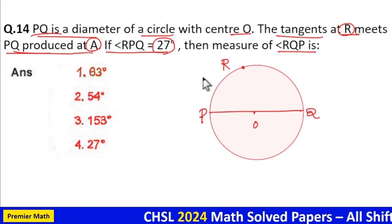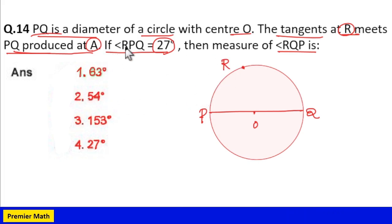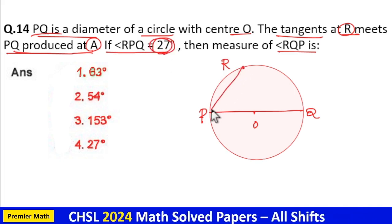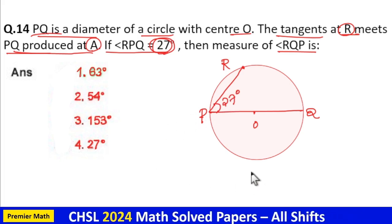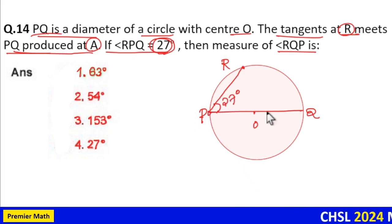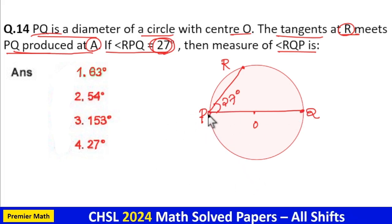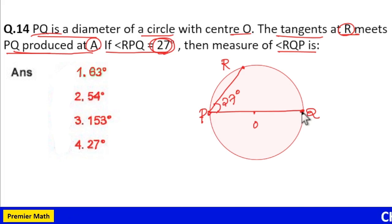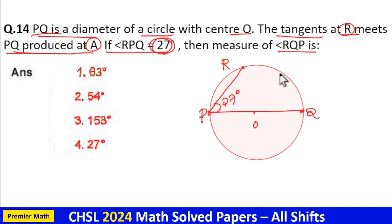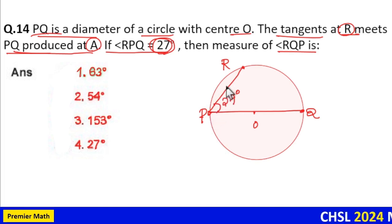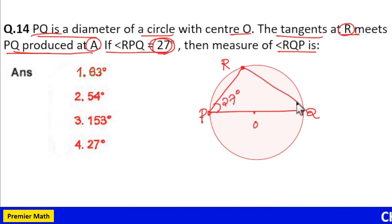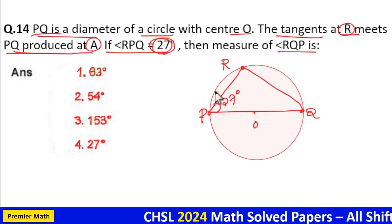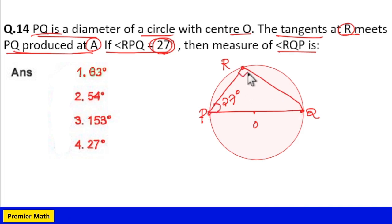Now angle RPQ is 27 degrees, which means this RPQ angle is 27 degrees. Then you can see this is diameter PQ. The diameter creates a 90-degree angle with any point on the circumference of the circle, which means this point R is on the circumference of the circle, so this angle PRQ is 90 degrees.